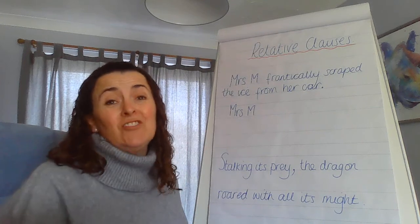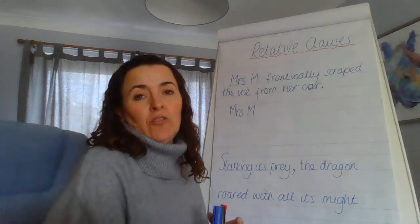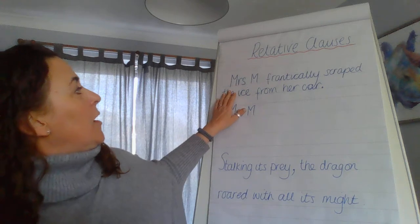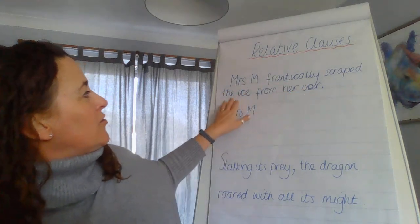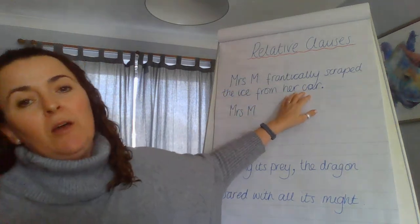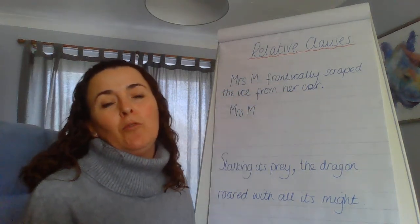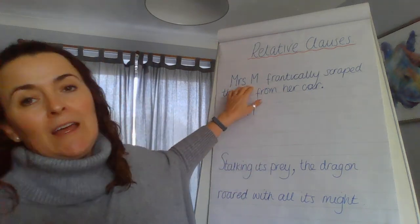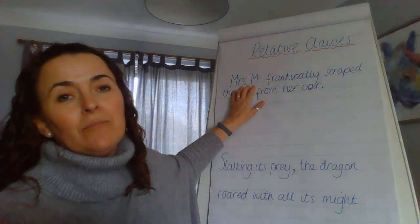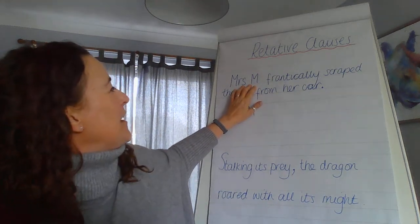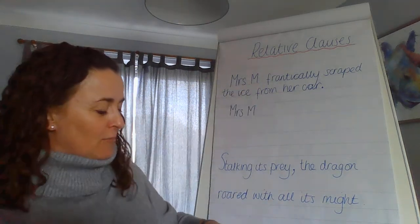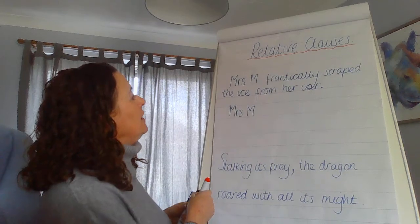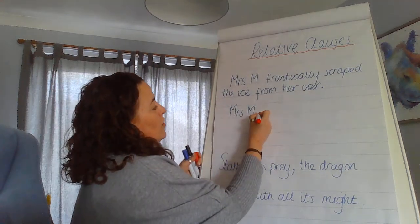You drop them into an independent clause or a sentence. Up here I've got 'Mrs M frantically scraped the ice from her car' and I want to add in a little bit more information about my noun — myself — so I'm going to do it in red so you can see it really clearly.